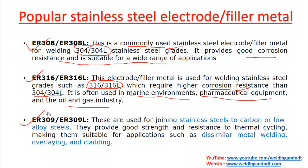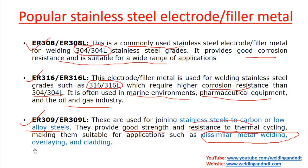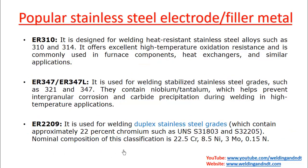ER309 and ER309L are very popular for dissimilar metal welding — for example, stainless steel to carbon steel or stainless steel to low alloy steel. They provide good strength and resistance to thermal cycling, and are also suitable for overlaying and cladding applications. ER310 is used to weld 310 and 314 grades, offering excellent high-temperature oxidation resistance and is commonly used for furnace components and heat exchangers.